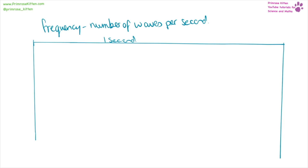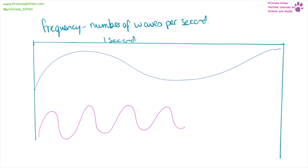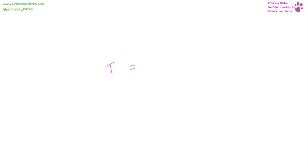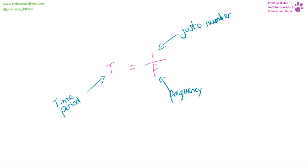Frequency is the number of waves per second. Something with a low frequency will not have many peaks in one second, but something with a high frequency will have lots of peaks within one second. A high frequency wave has a short wavelength whereas a low frequency wave has a long wavelength. If we want to measure the time period, that is one over the frequency. Time is measured in seconds and frequency is measured in hertz — capital H, lowercase z. Do not write both letters lowercase or both uppercase, as those are wrong.